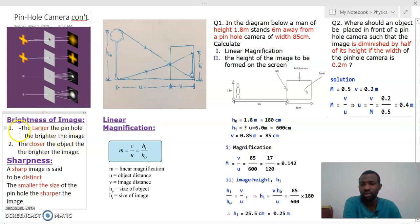What we see here: one, the larger the pinhole, the brighter the image. So if the size of the pinhole is made big enough, then enough light will enter inside it and the image produced is seen to be bright. The second one says that the closer the object, the brighter the image. So if the object is very close to the pinhole camera, then the image is also bright.